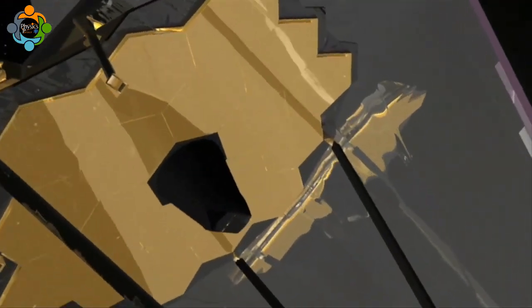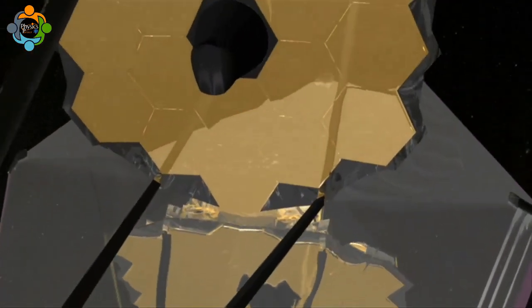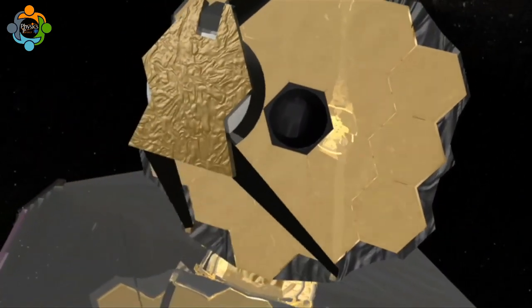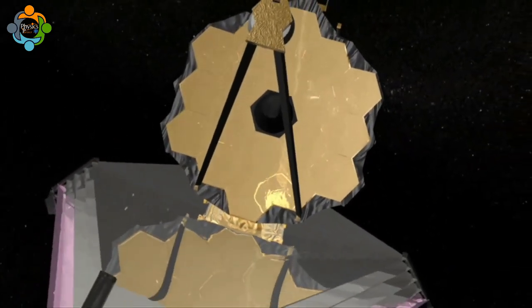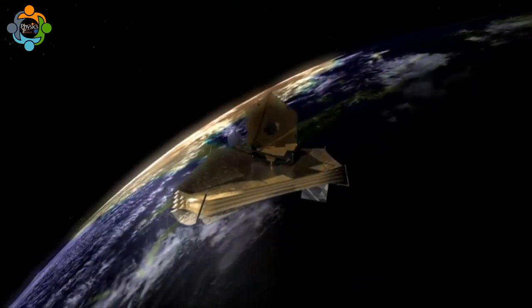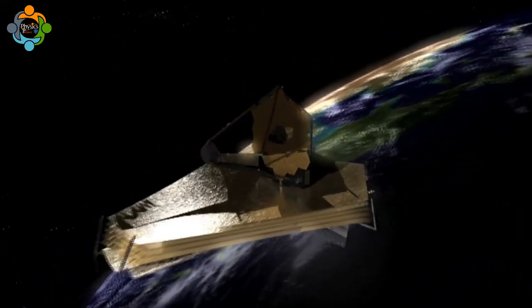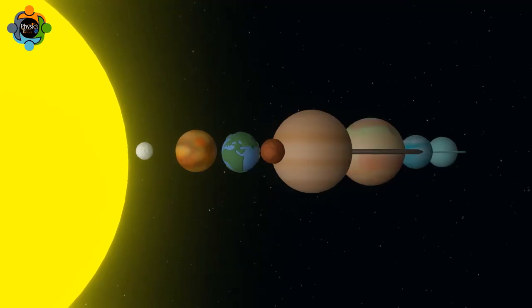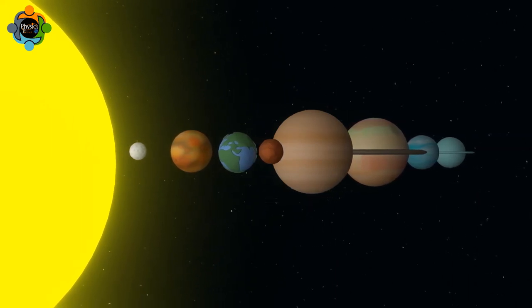This knowledge is crucial for planning and executing complex missions to study the outer planets and their moons, contributing to our expanding knowledge of the cosmos. In conclusion, Kepler's Third Law plays a crucial role in our understanding of the outer planets.